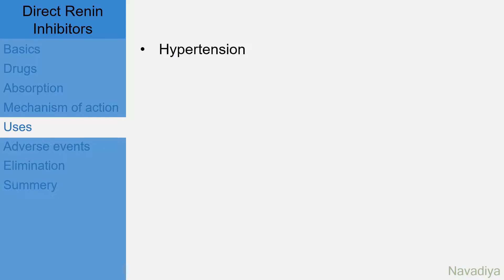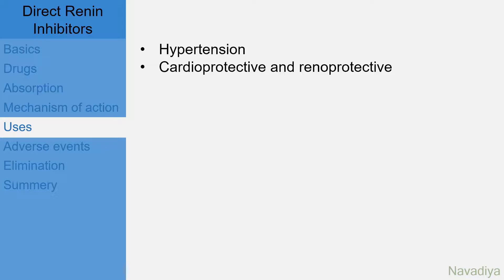Apart from hypertension, trials have shown that Aliskiren is cardioprotective and renal protective for patients with ventricular hypertrophy, heart failure, and diabetes mellitus.